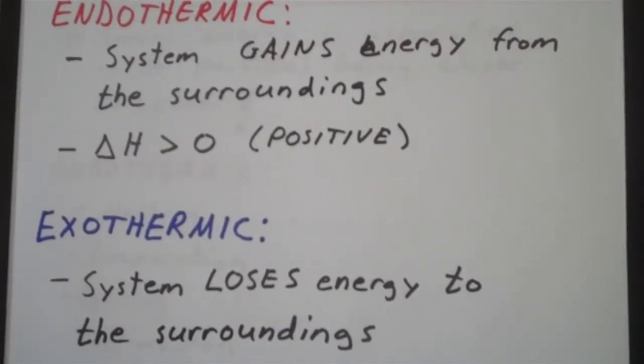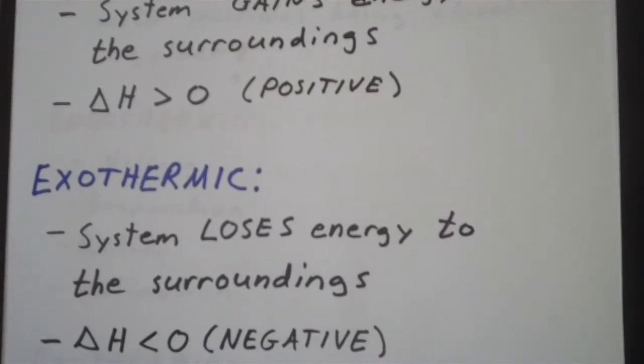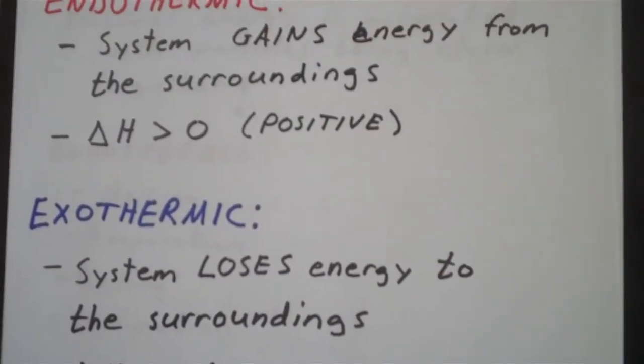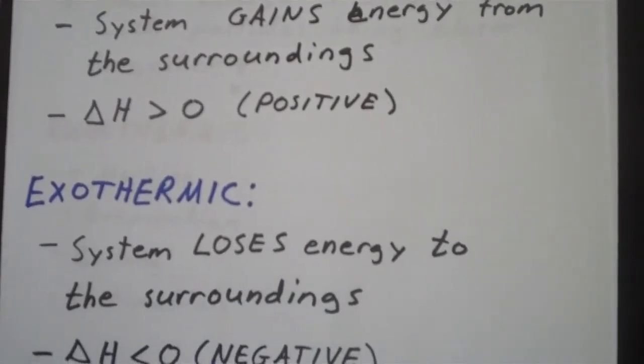Endothermic, system gains energy. Exothermic, system loses energy. Also, know the signs of delta H for an endothermic process and an exothermic process.